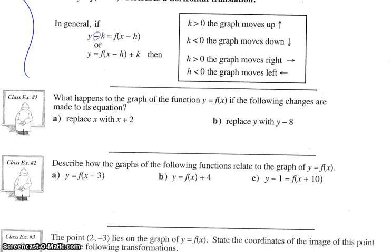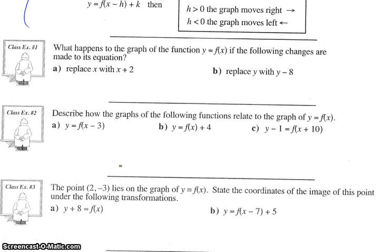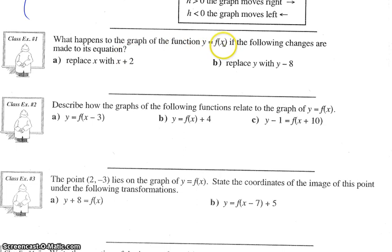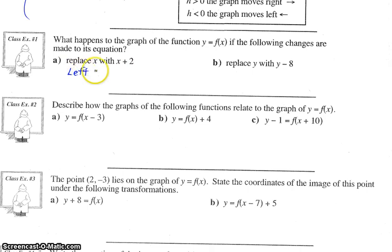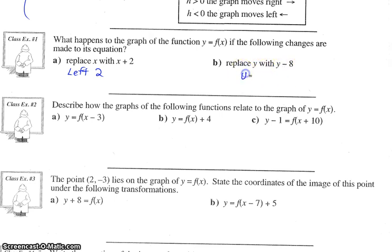What happens to the graph of the function y equals f of x if the following changes are made to its equation? If we replace x with x plus two, remember it's opposite of what you think — so it's horizontal because of x, and we think it would be right two, but it's actually moving left two. For part b, if we replace y with y minus eight, we're talking something vertical — you'd think down, but it's actually up eight units.